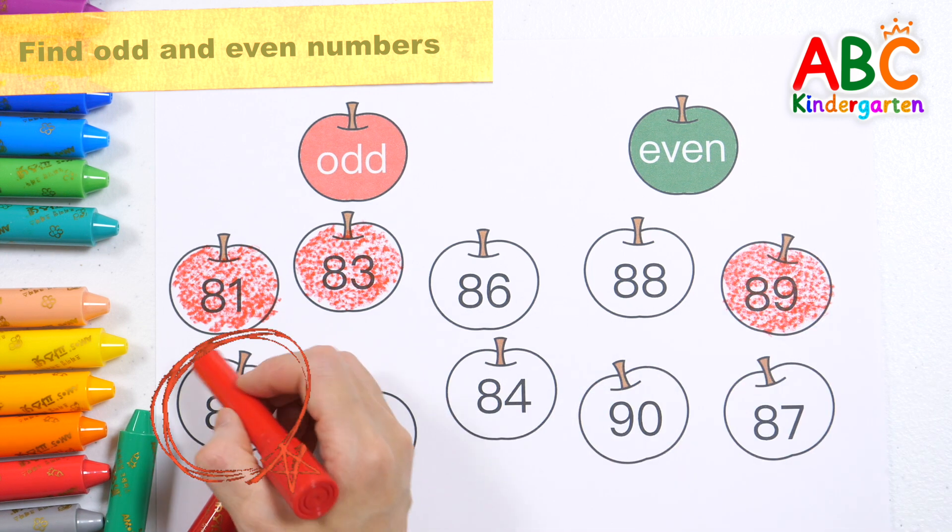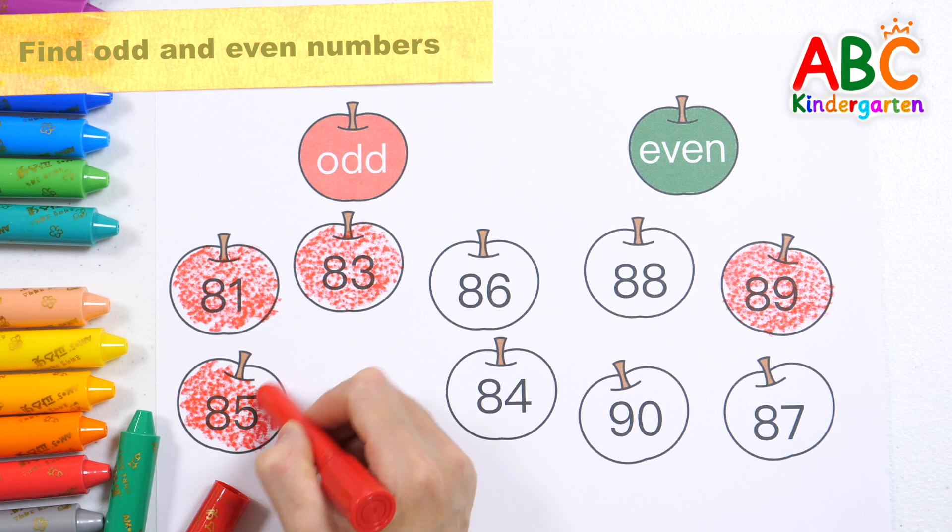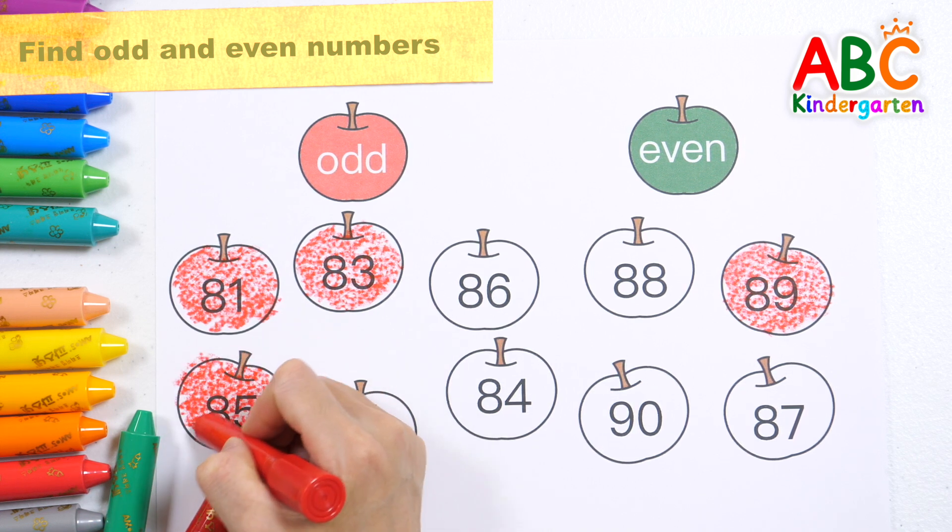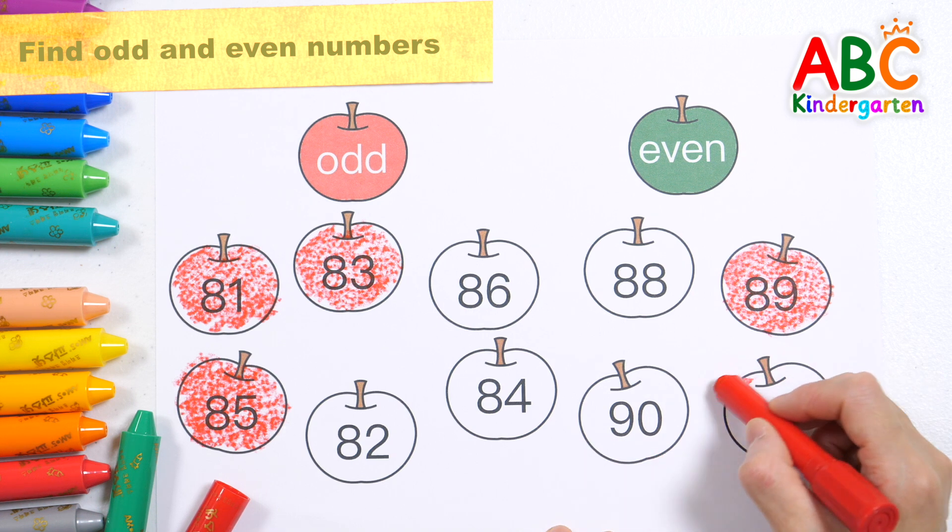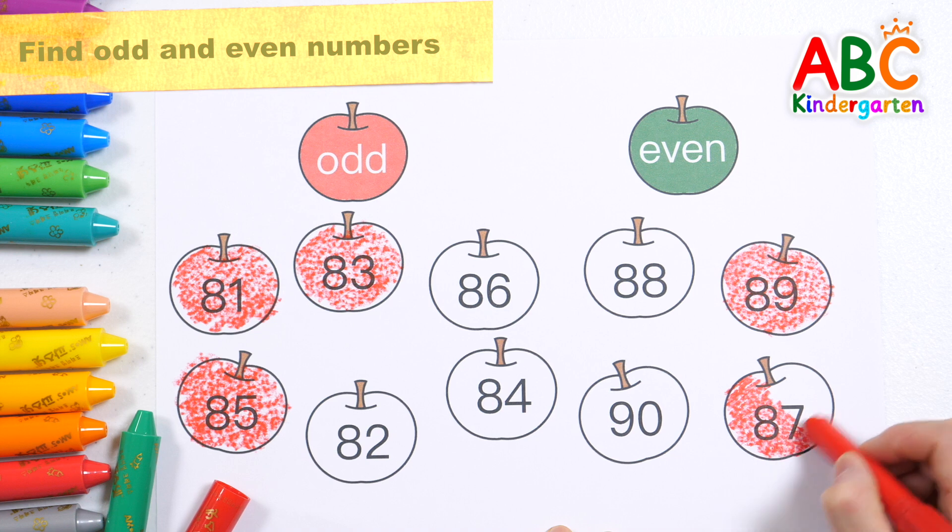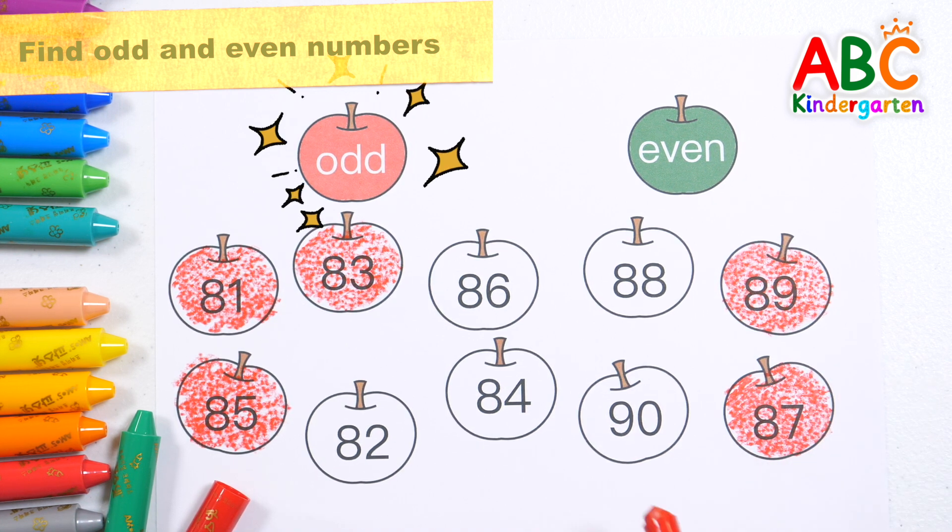Eighty-five, eighty-seven. It's an odd number.